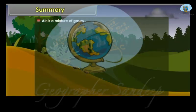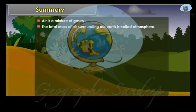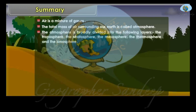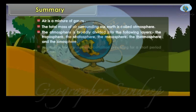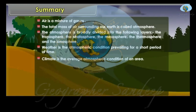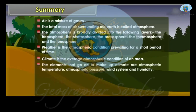Summary. Air is a mixture of gases. The total mass of air surrounding our earth is called the atmosphere, which is broadly divided into the troposphere, stratosphere, mesosphere, thermosphere, and ionosphere. Weather is the atmospheric condition prevailing for a short period of time, while climate is the average atmospheric condition of an area. The elements that make up climate are atmospheric temperature, atmospheric pressure, wind system, and humidity.